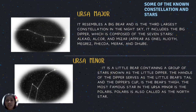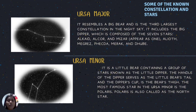Some of the known constellations and stars: the International Astronomical Union (IAU) made a list of official modern constellations. There are 88 constellations on the list, and many of these were discovered by the ancient Greeks.